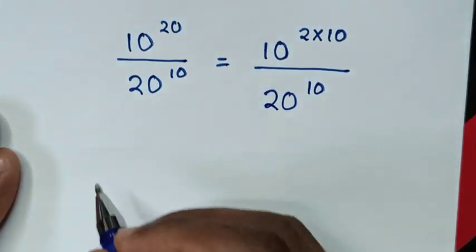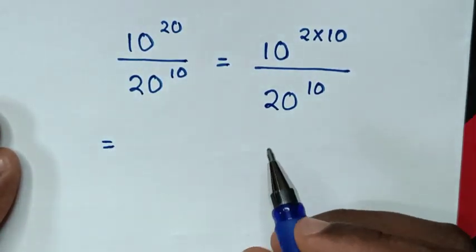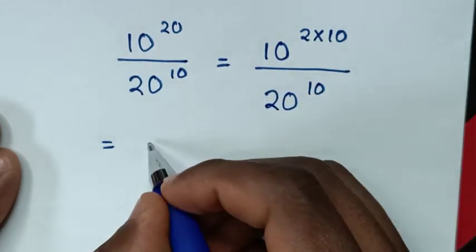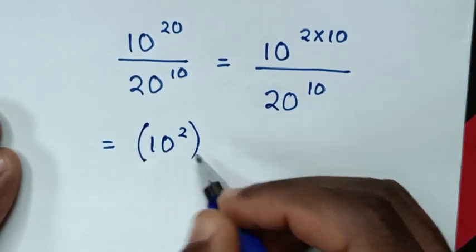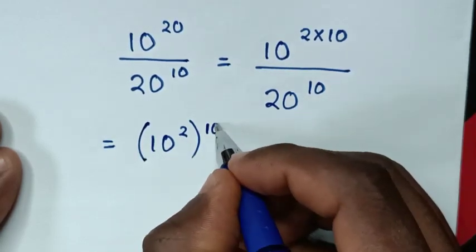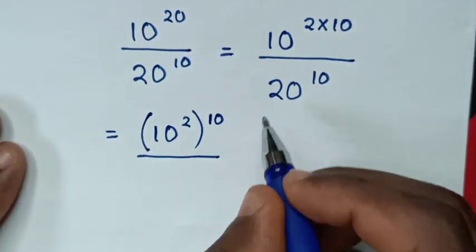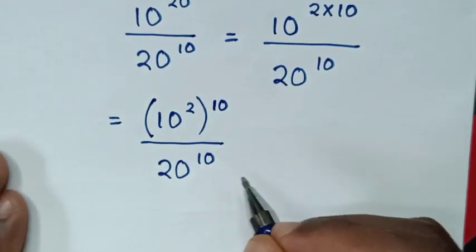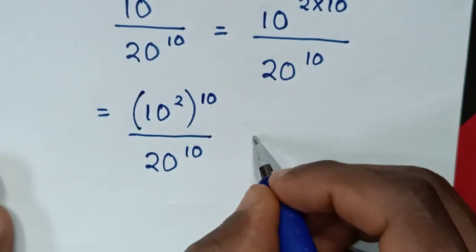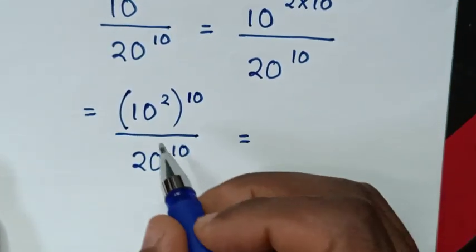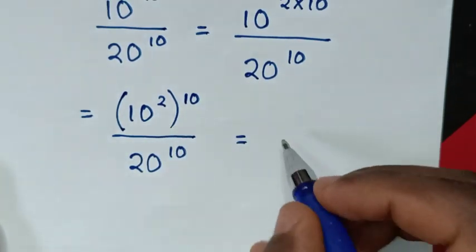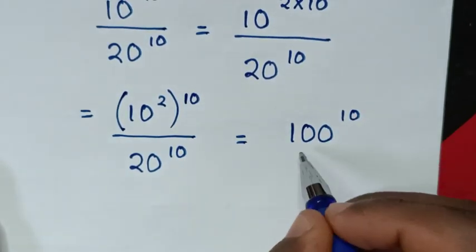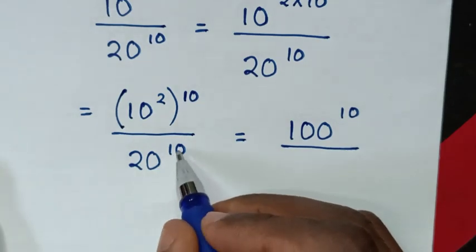Then in the next step, it will be equal to — we take this power of 2 inside the bracket, so it will be 10 power of 2, then bracket power of 10 outside the bracket, then over 20 power of 10. Then in the next step, in here 10 squared is 100, then power of 10, over 20 power of 10.